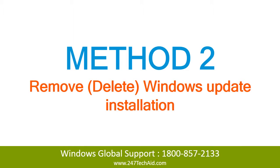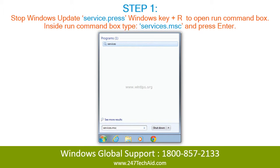Method 2: Remove Windows Update Installation. Step 1: Stop Windows Update Service. Press the Windows key plus R to open the run command box. Inside the run command box, type services.msc and press Enter.